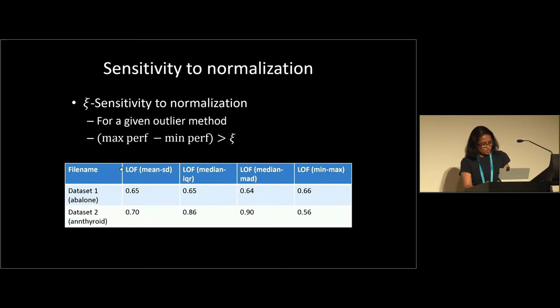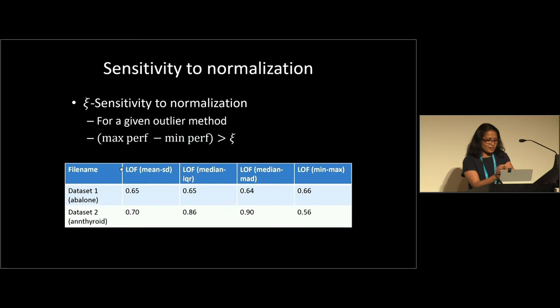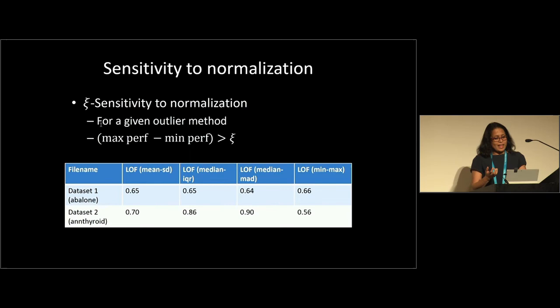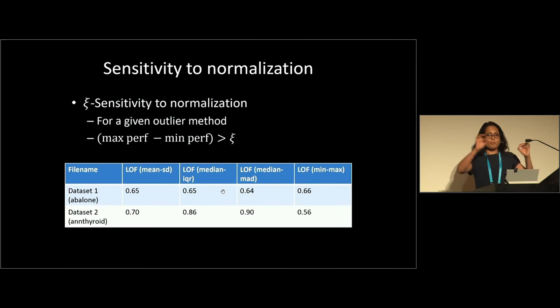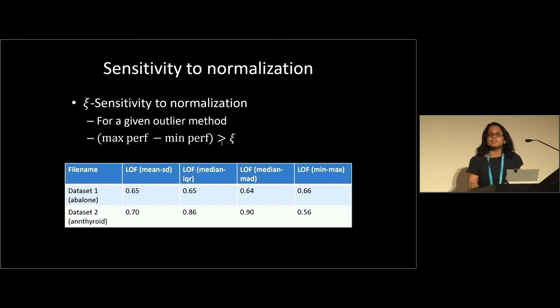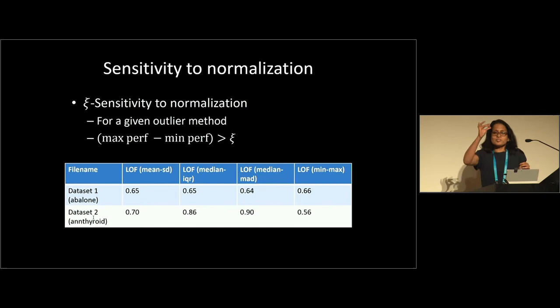We introduce a notion of sensitivity to normalization. For a fixed outlier detection method, if the difference between the best and worst normalization performance — maximum minus minimum AUC — is greater than a threshold psi, we say the dataset is psi-sensitive to normalization. For example, the second dataset is psi-sensitive with psi = 0.3 or even 0.34, while the first dataset is not psi-sensitive with psi = 0.05. Psi measures how much performance difference normalization can cause.